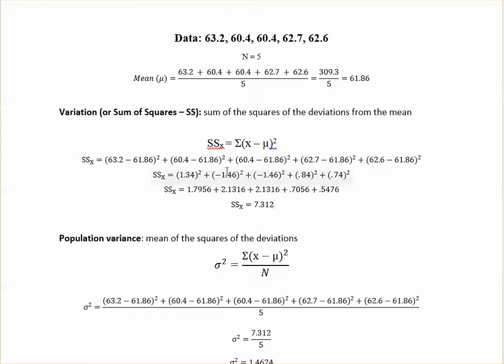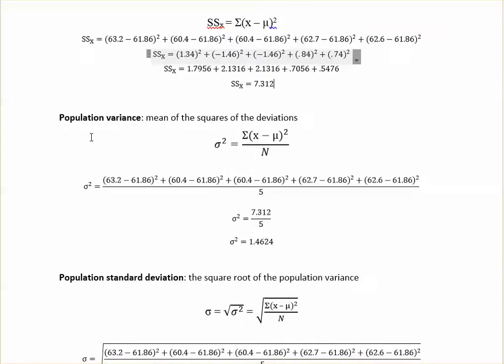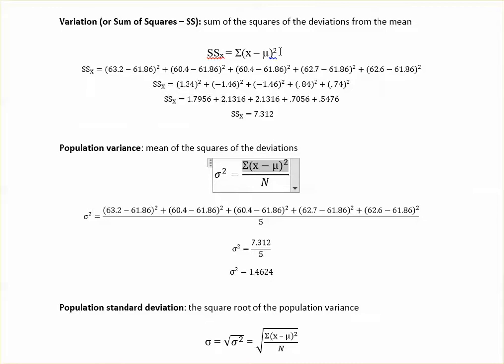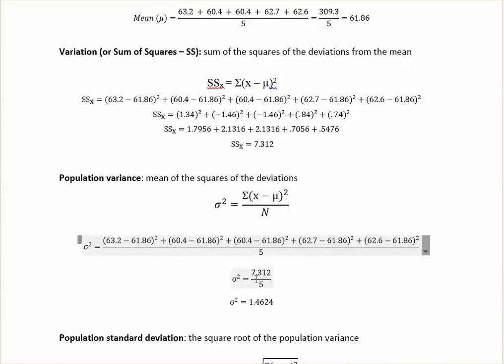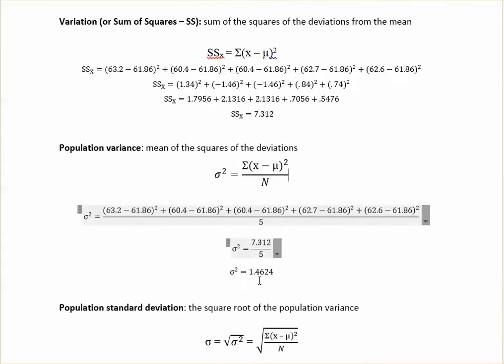So that one will then be used to find your population variance, as well as your sample variance. So technically, for this one, if you look, this top part of the formula is the exact same as your variation or sum of squares. So you're just taking this number that you already found, even though I went ahead and wrote it out right there, and you're dividing it by your n, which remember n was 5, because there's 1, 2, 3, 4, 5 numbers. So 7.312 divided by 5 is 1.4624. So that's your population variance. If you're wondering what that little guy right there, that's a sigma, and the sigma squared is how you would do your population. That's kind of the symbol for population variance.